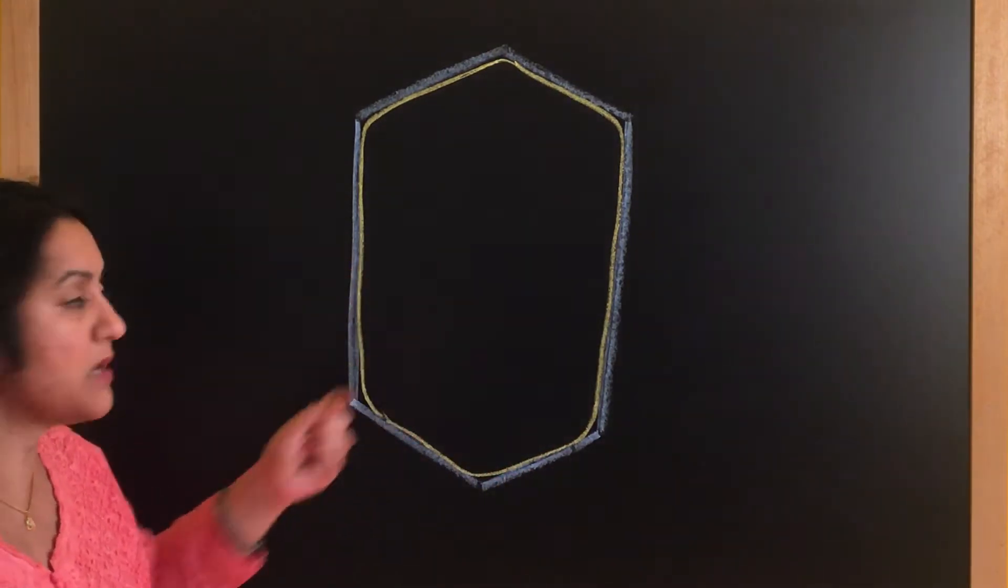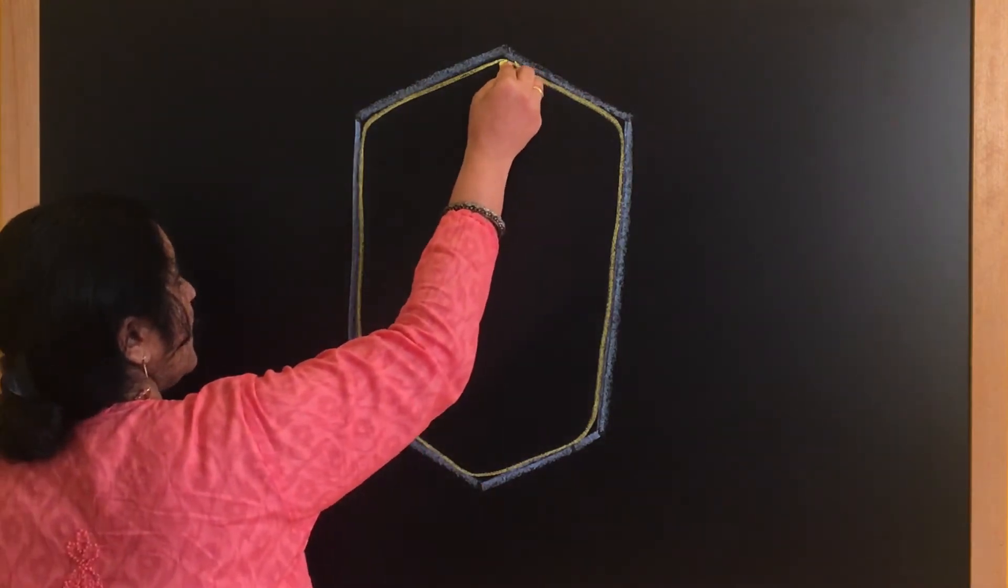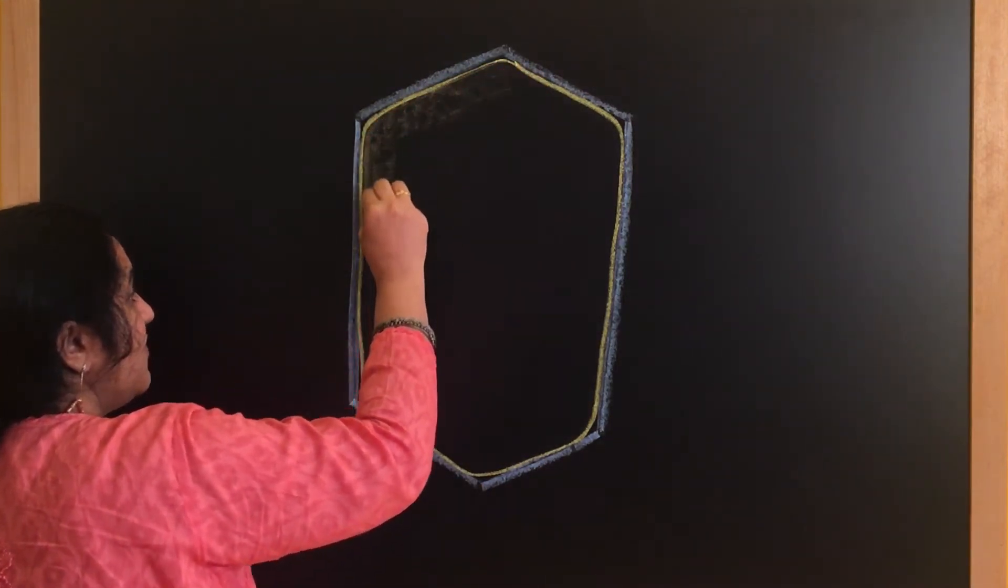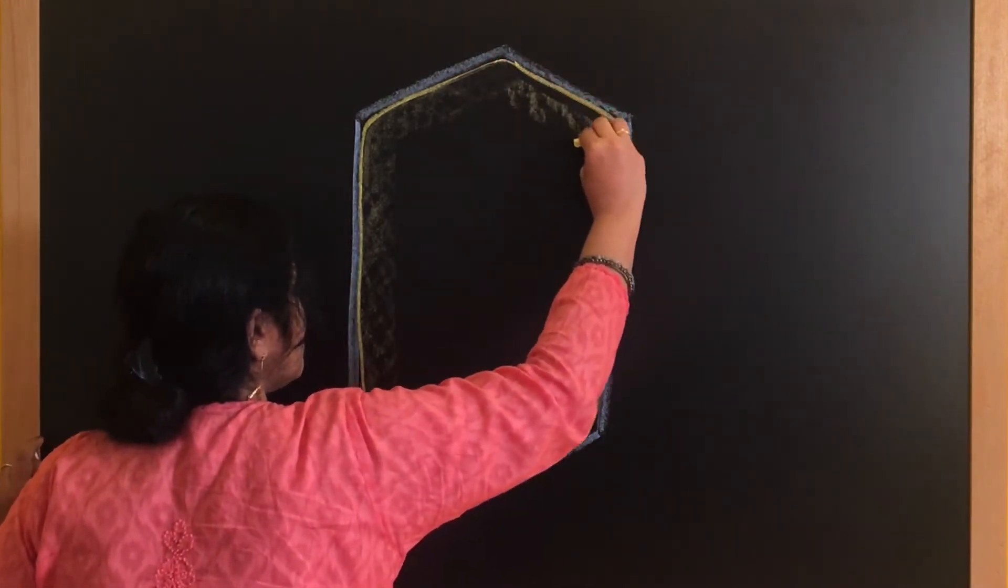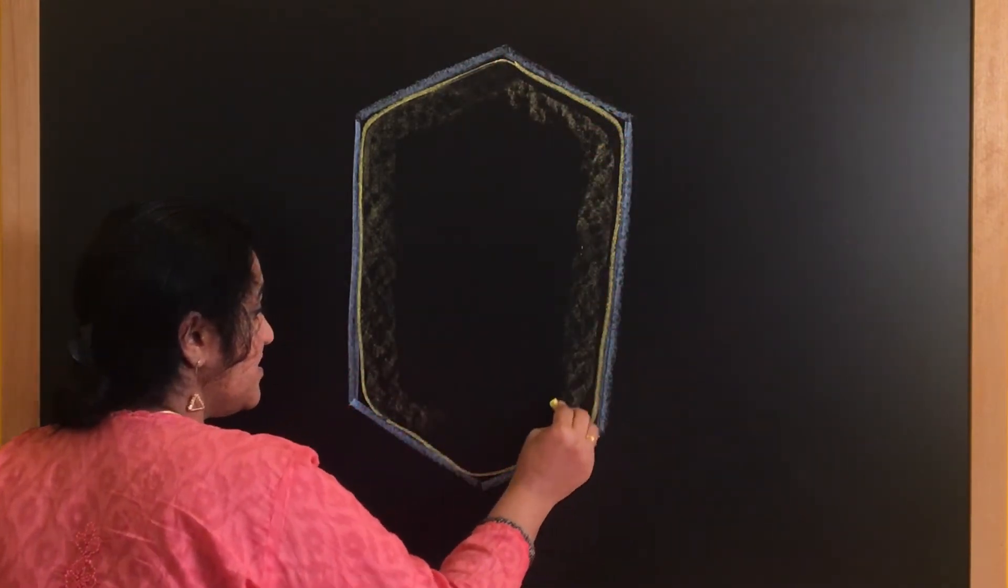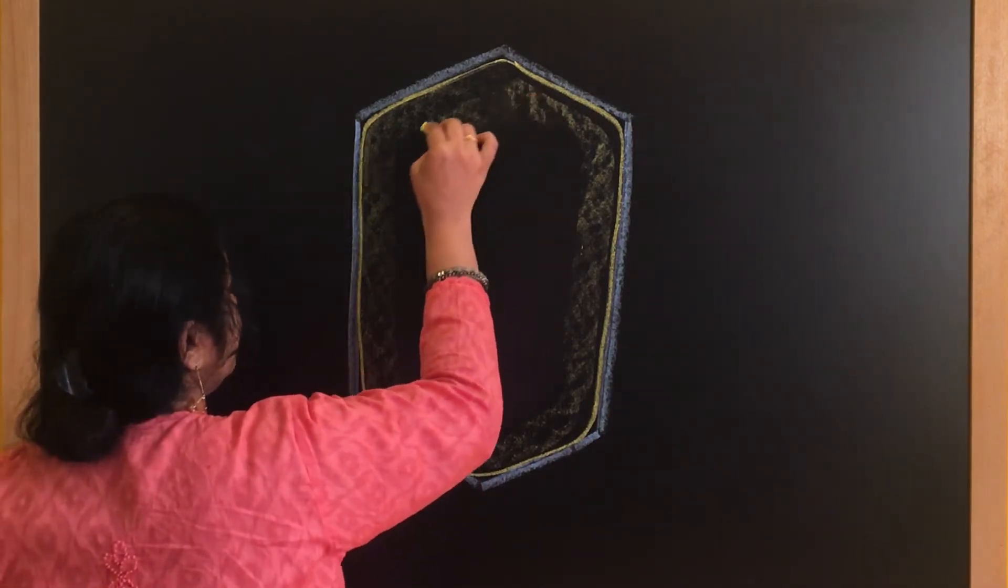Now what is there inside the cell membrane? Cytoplasm. And just give a shading here using your pencil. Smudge it inside and this gives a jelly-like appearance to the cytoplasm.